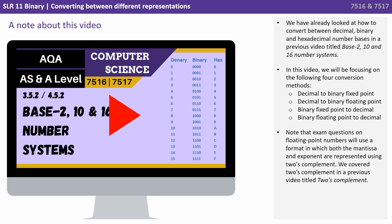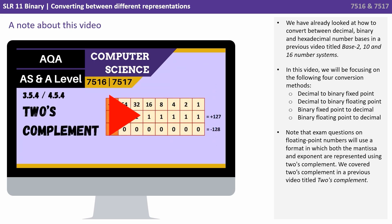In this video we'll be focusing on the following four conversion methods: decimal to binary fixed point, decimal to binary floating point, binary fixed point to decimal, and binary floating point to decimal. Note that exam questions on floating point numbers will use a format in which both the mantissa and exponent are represented using 2's complement, which we covered in a previous video.